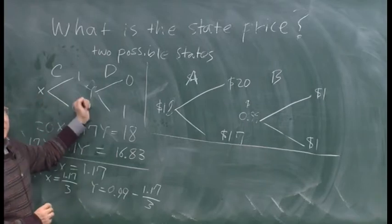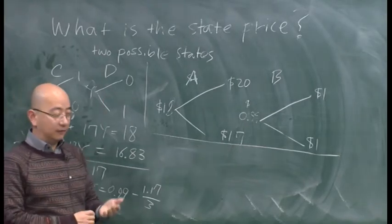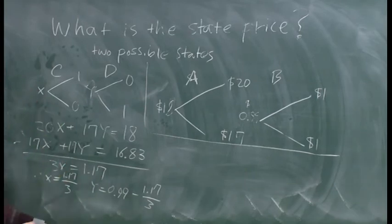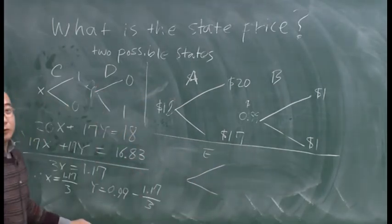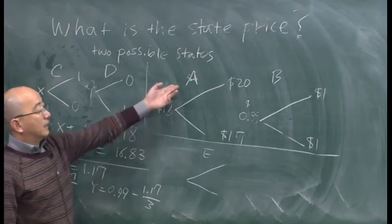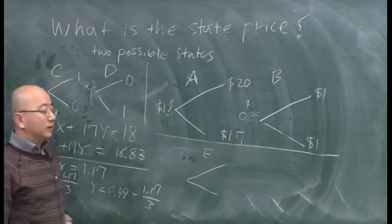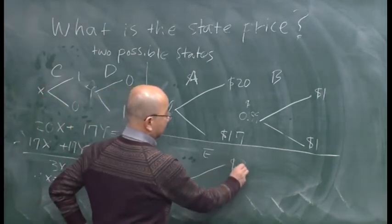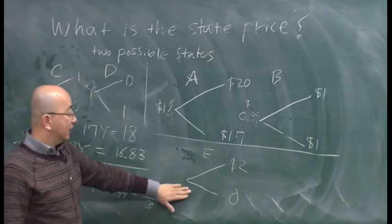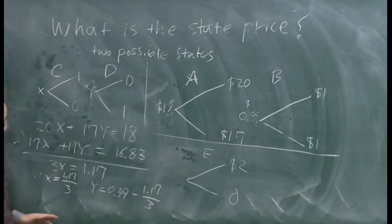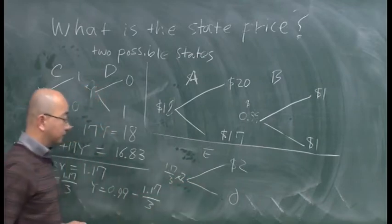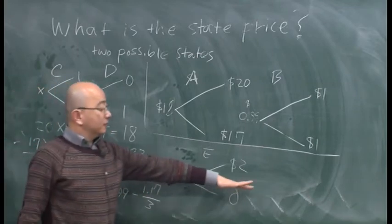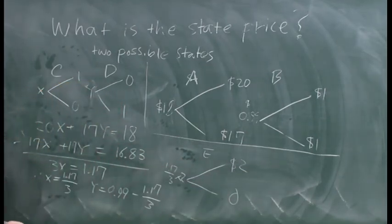So from this algebra, you can determine the value of X and value of Y. And once you determine value of X and Y, then you can determine price of any other asset. For example, if some asset, asset E, pays, let's say asset E is a call option with a strike price of 18 on A. If it's a call option on A with a strike price of 18, its payoff will be 2 and 0. And we can easily see that the value of this option is 2 times X, which is 1.17 over 3 times 2. If you come up with any other asset, it will be quite straightforward to determine the current price of any other asset.